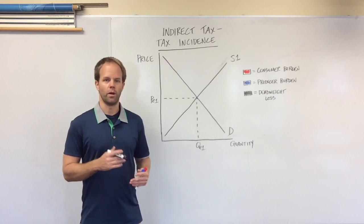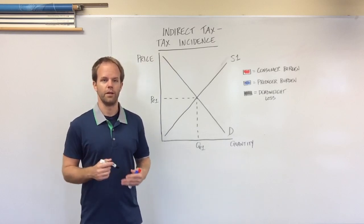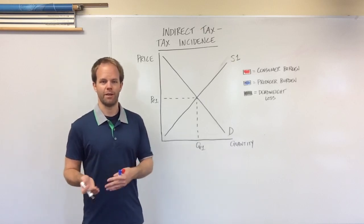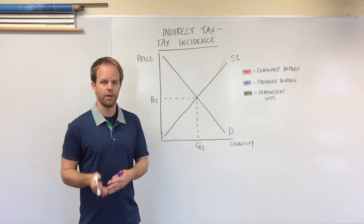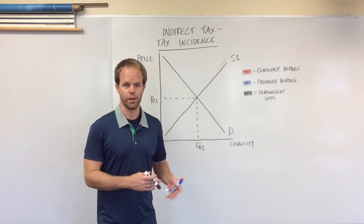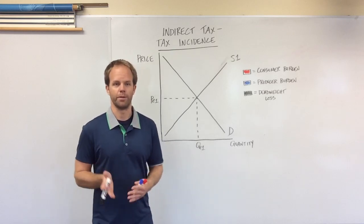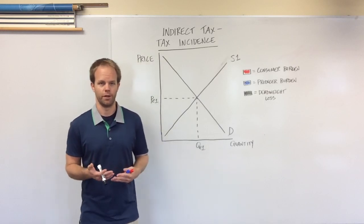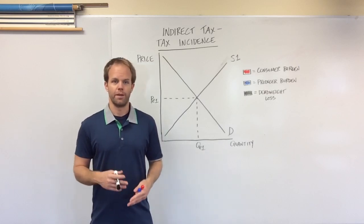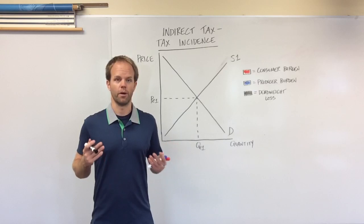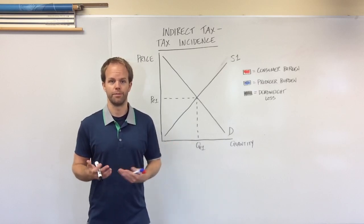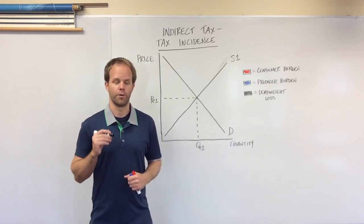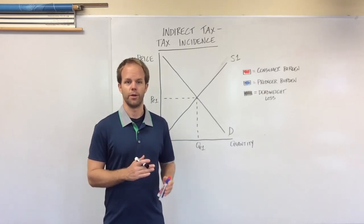Indirect taxes, one way or another, are going to hurt the revenue of the producer or the one selling the product. When businesses have less revenue, they then have less money to spend on their factors of production — that is one reason why supply decreases with an indirect tax. Another reason is that indirect taxes increase the costs of production for businesses; they have to adjust prices for all their products, which usually requires worker time. So it decreases revenue and increases costs, and for that reason, an indirect tax decreases supply.